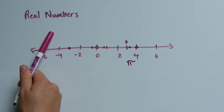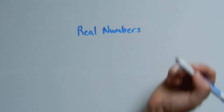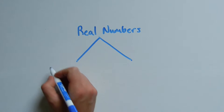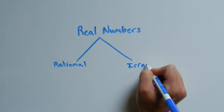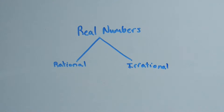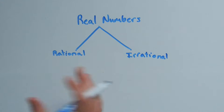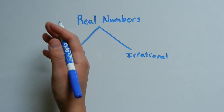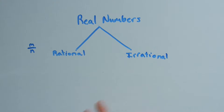Let's look at the breakdown of real numbers. First we have real numbers, and within real numbers we have rational and irrational. When you hear rational, think ratio. A rational number is a ratio that can be represented by an integer over an integer — M over N — where M and N are both integers. So you have 10 over 3, 500 over 20, 7922 over 10,000, and so on. Those are all rational numbers.